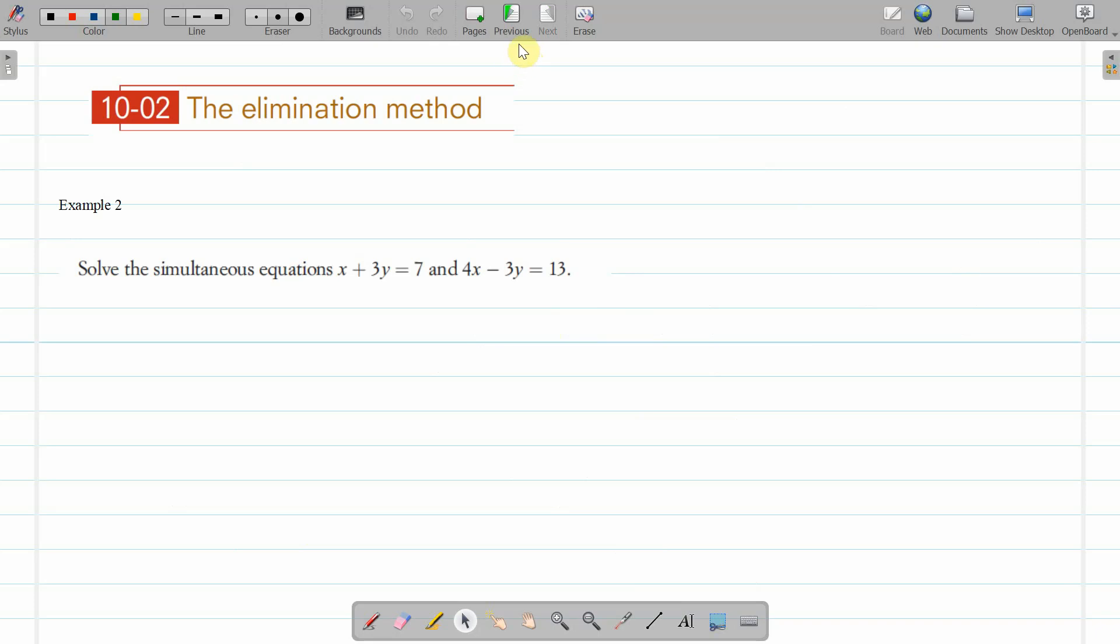Well in this case here, a lot of the process is the same. We've got variables are x and y. We'll write them out first. Equation 1: x plus 3y equals 7, and equation 2: 4x minus 3y equals 13.